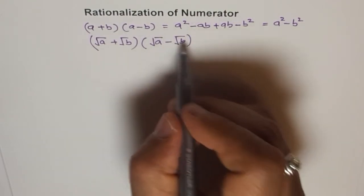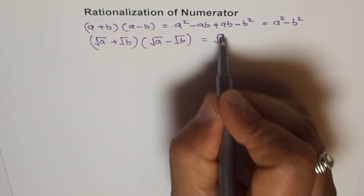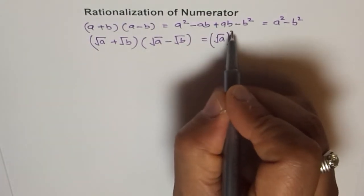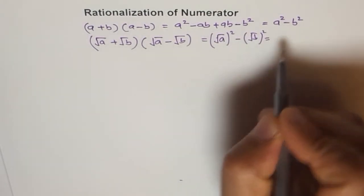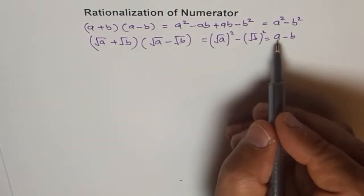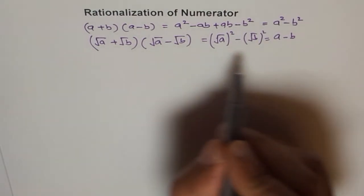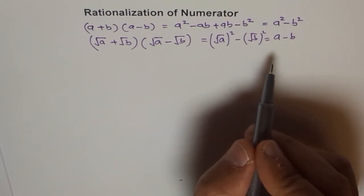And when you do that, you get a square minus b square. Square of square root, let me write this, like this square, minus square root of b square, equals a minus b. Square of square root is just the number a. So in the process, what you have done is you have removed the radical. And that is the huge application. Once you do that, it's so easy to simplify.